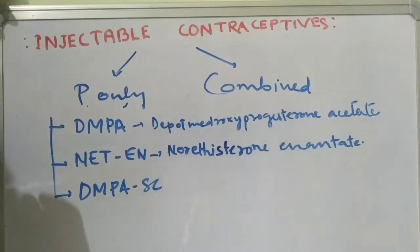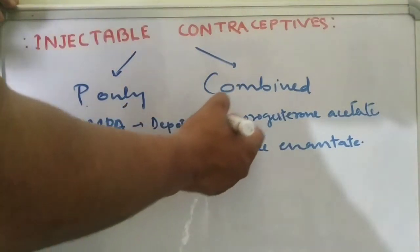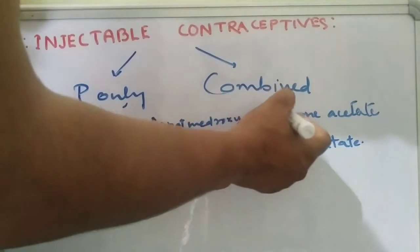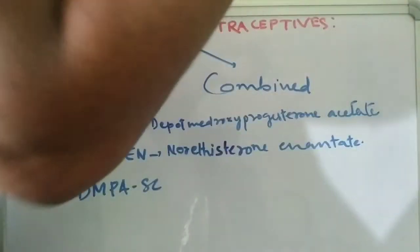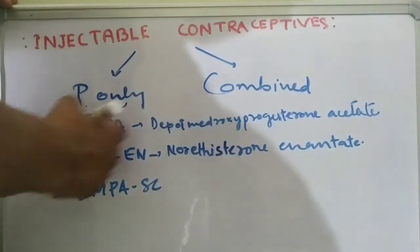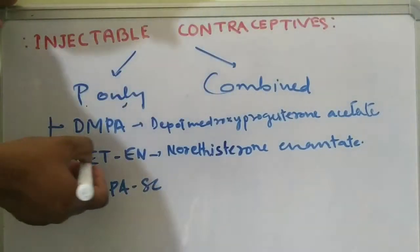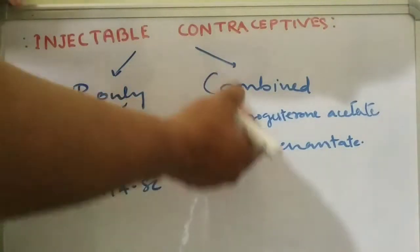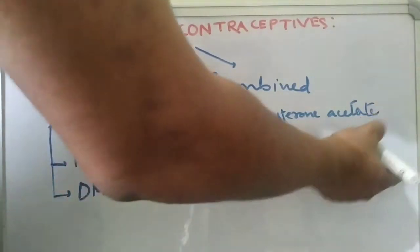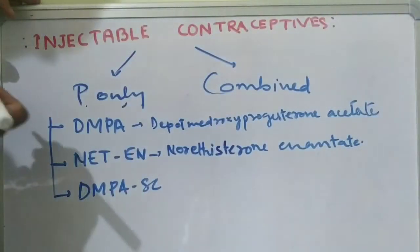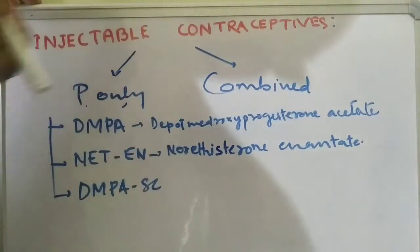The first subtype is DMPA, which means Depot Medroxyprogesterone Acetate. The next type is NET-EN, i.e., Norethisterone Enanthate. And the third is DMPA Subcutaneous.